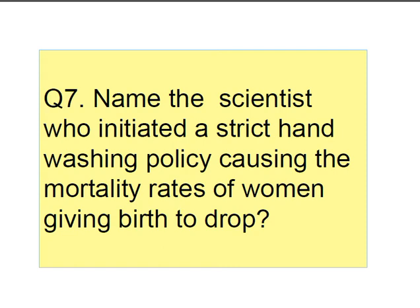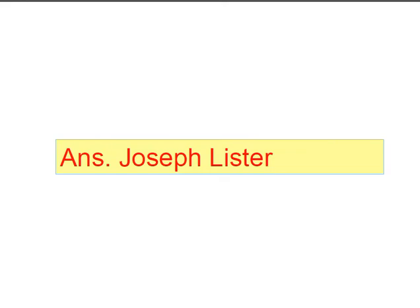Question number seven: name the scientist who initiated a strict hand-wash policy, causing the mortality rates of women giving birth to drop? Answer is Joseph Lister. He is also called father of antiseptic surgery. He was the first person who advised that if the hands are cleaned with a dilute solution of phenol, also known as carbolic acid, that will reduce the chances of infection.